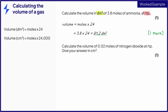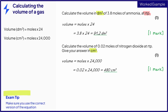In the second example, you are asked to calculate the volume of nitrogen dioxide in centimetres cubed, so you need to use this version of the equation. Substitute the number of moles into the equation to calculate the final answer. It is important that you use the correct version of the equation, depending on the units of the volume of gas.